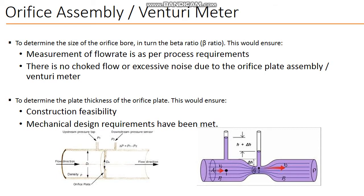What is the objective of sizing an orifice? We have to find the size of the bore diameter and beta ratio. Beta ratio is the ratio between bore diameter to the pipe diameter.